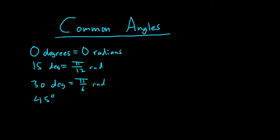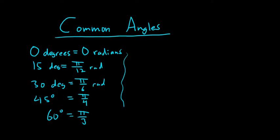45 degrees would be pi over 4. And as we talked about before, whenever you don't write radians, you just assume it's radians. Then 60 degrees is pi over 3 radians. These are probably some of the most important ones.